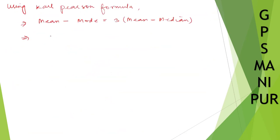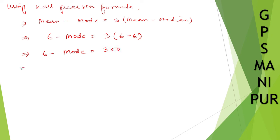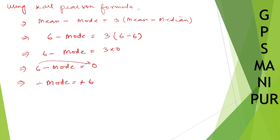So 6 − Mode = 3 × 0 = 0. Therefore, −Mode = 0 − 6 = −6, which means Mode = 6. So we have found that the mean, median, and mode are all equal to 6. That's all, thank you so much. We will meet in the next video.